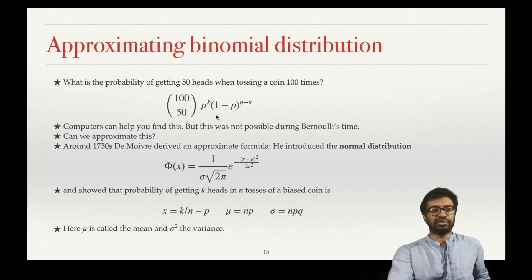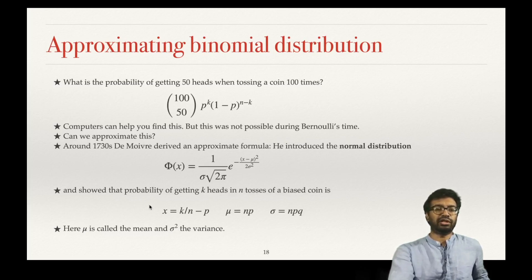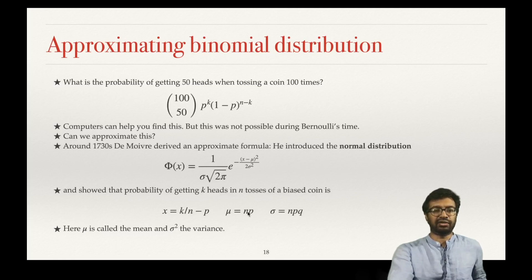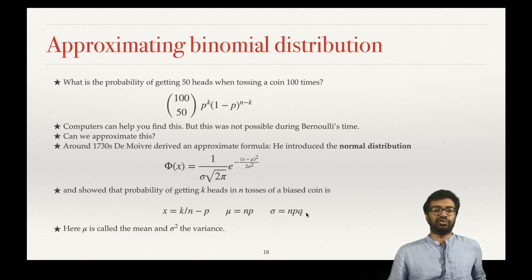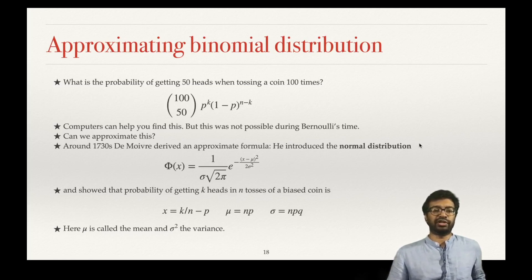The real value is the binomial distribution. So if you want to find the probability of getting 50 heads when you toss a coin 100 times, substitute k as 50, n as 100. For a fair coin, x equals k/n minus p equals 0, mu equals n times p equals 50, and sigma equals the square root of 100 times 1/4, which equals 25.